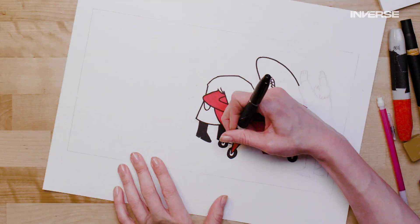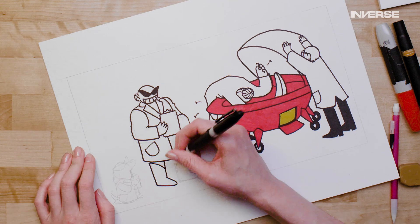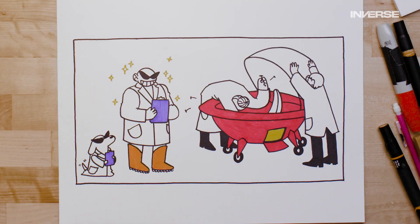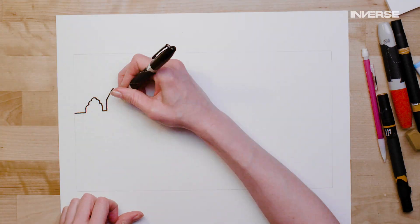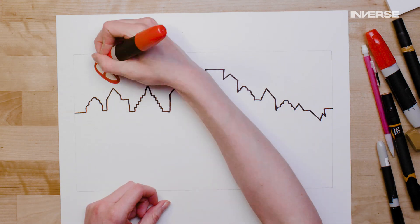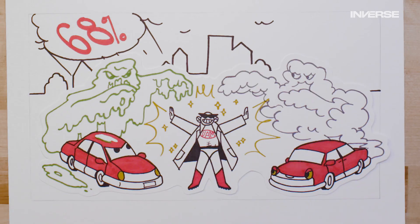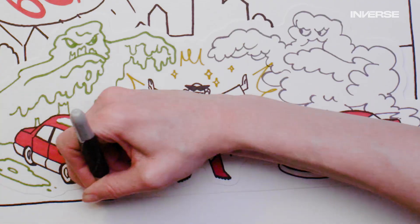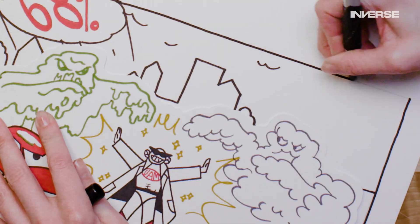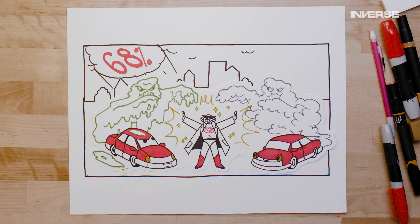Flying cars have actually been in the works for years. But the first question is, why do we need them? Well, the United Nations predicts that 68% of the world's population will live in cities by 2050. That means a lot more traffic and a lot more pollution. So urban air mobility, UAM for short, would reduce our carbon footprint and clear up traffic congestion.